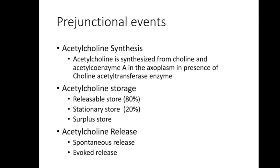Acetylcholine is released by two mechanisms: spontaneous release, where vesicles touching the membrane release acetylcholine producing miniature end-plate potentials; and evoked release, where a nerve impulse causes a large quanta of acetylcholine release. This evoked response combined with the miniature end-plate potential produces the actual end-plate potential.